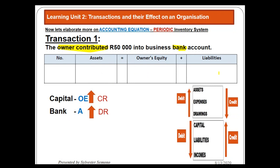Now I record the entries. Capital is owner's equity, so I affect owner's equity. Bank is an asset, so I affect assets. There are no liabilities, so I put zero there. This is transaction number one. Assets are increasing, so I put plus 50,000 under assets. Owner's equity is also increasing, so plus 50,000 there. Liabilities remain zero.